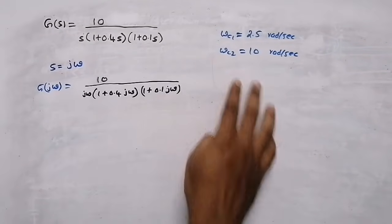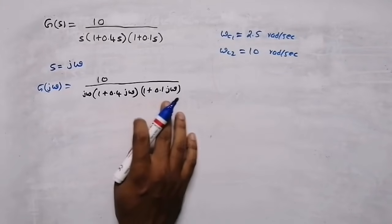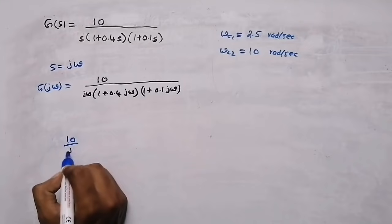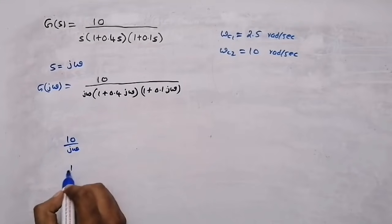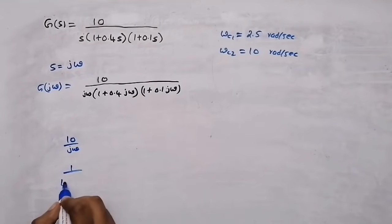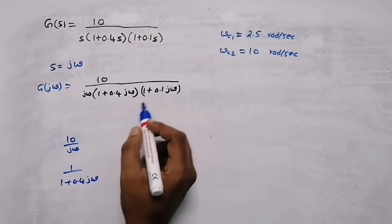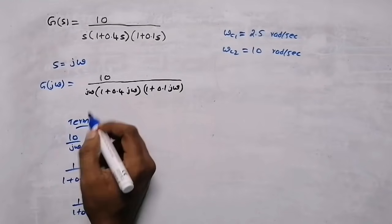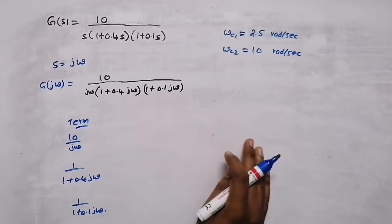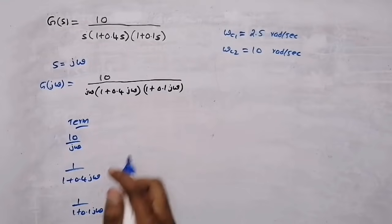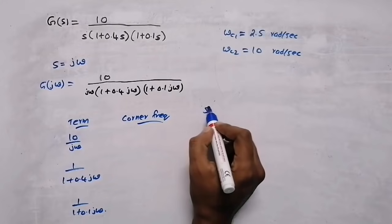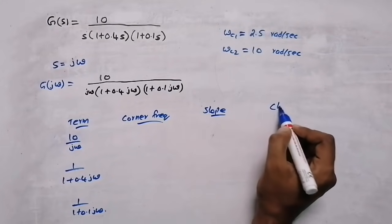After finding the corner frequencies, check the number of terms in the equation. There are three terms: the first is 10/jω, the second is 1/(1 + 0.4jω), and the third is 1/(1 + 0.1jω). Now draw a table with columns: term, corner frequency, slope, and change in slope.